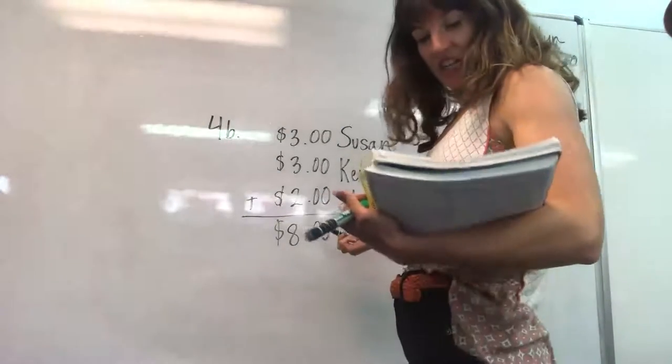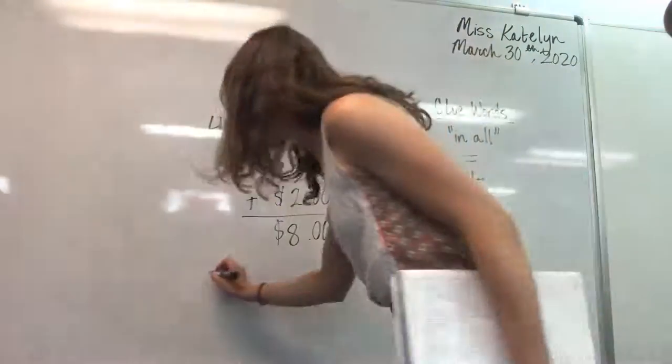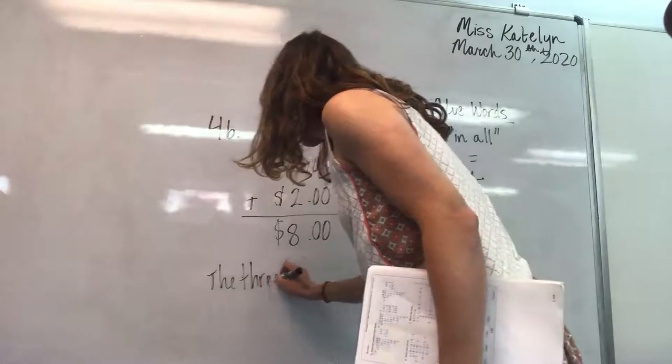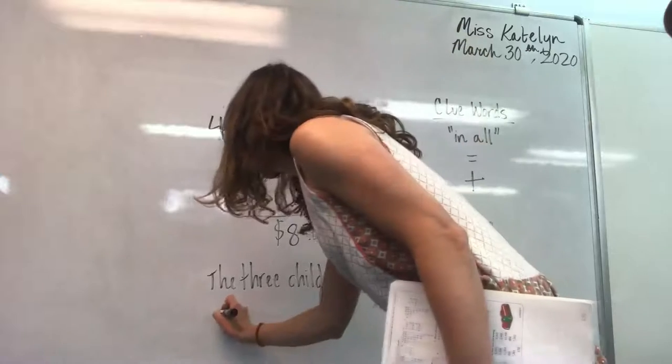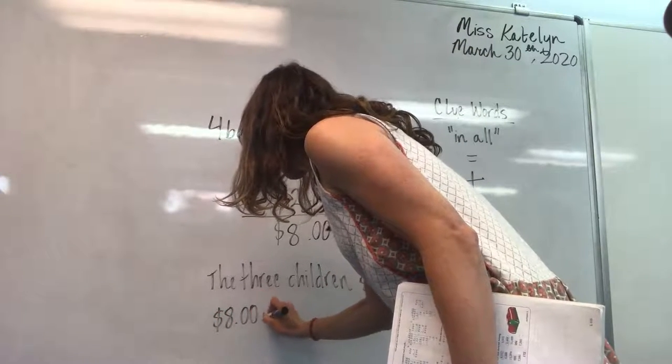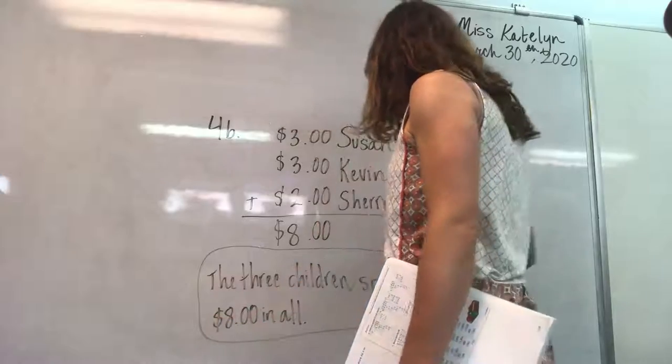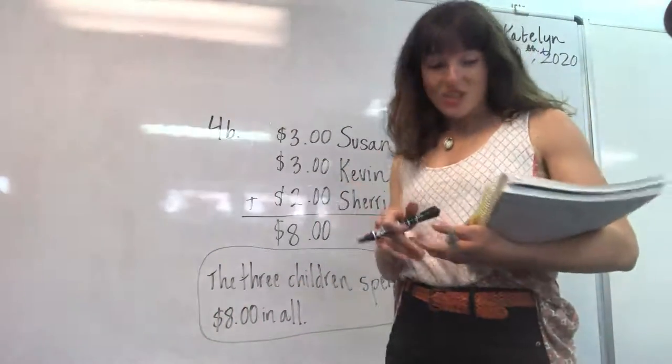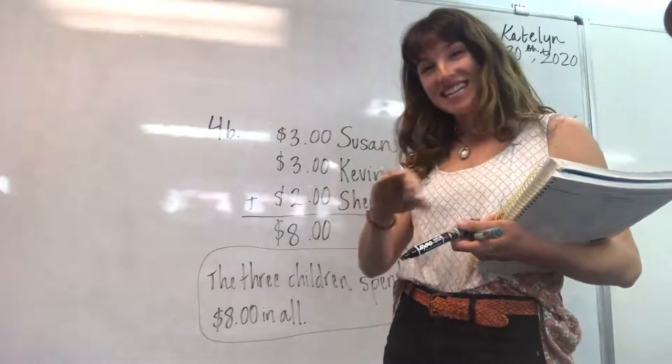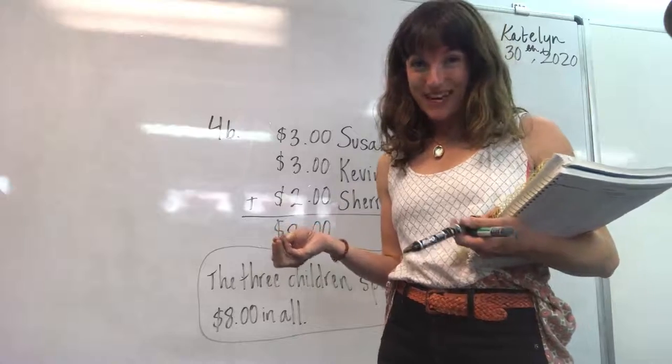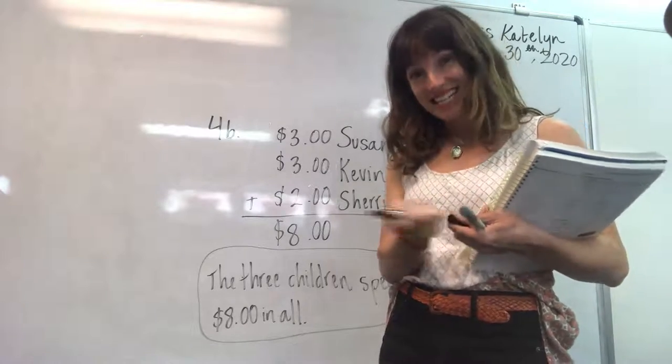All right. So the three children spent. This is your final answer. This is a story problem. So you have to write it in a story. And then you have to circle it. All right. Please. In story problem 4A, make sure your final answer is in a sentence with capitalization and punctuation and everything spelled correctly. Okay. Even though it is a measurement equation, it is still a story problem. And your final answer must be in a sentence.